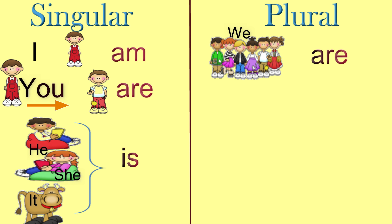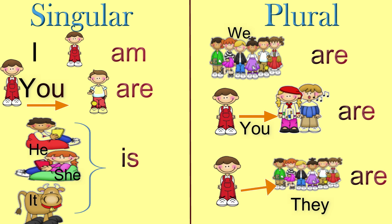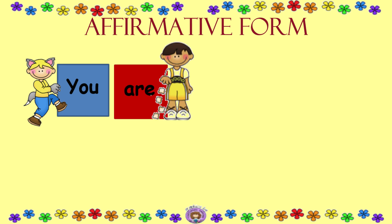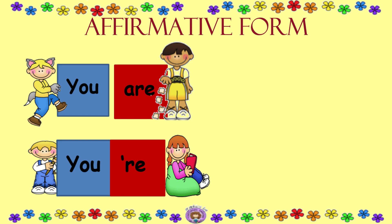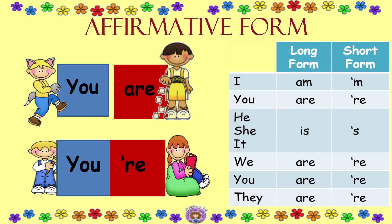In the plural, this is a group of people speaking: we are. You are addresses a number of people — at least two or more. They are is used when talking about people in their absence. Short forms: you're, he's, she's, it's, they're. We are, you are, they are.